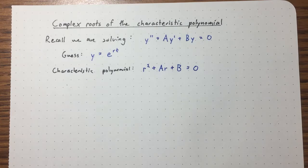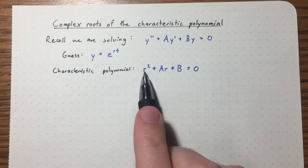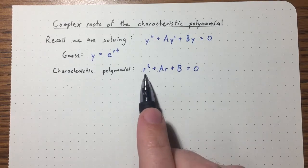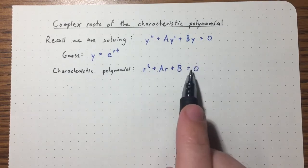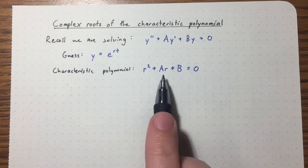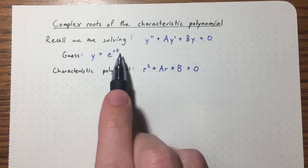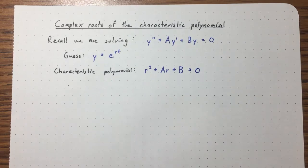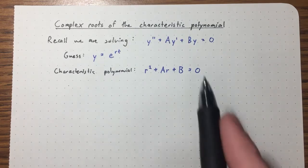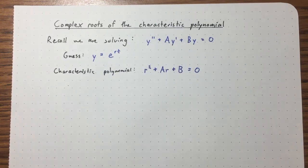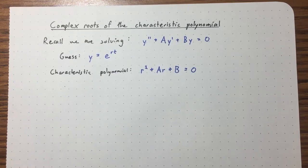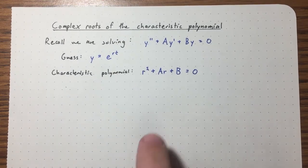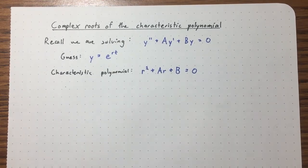Two lectures ago, we talked about what to do when this has real roots — that was pretty self-explanatory. We just immediately got two solutions, and based on properties of solutions to linear second order differential equations, we were able to write down a general solution right away. But what do we do if we have complex roots?